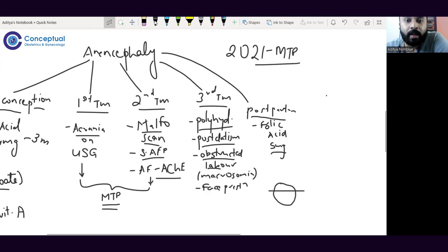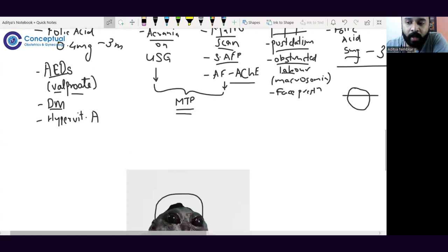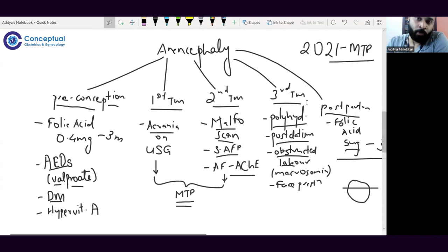That is it about anencephaly today. I hope you all liked this lecture. Here we spoke of five different phases during pregnancy in which we can prevent anencephaly from happening and how we can detect anencephaly.